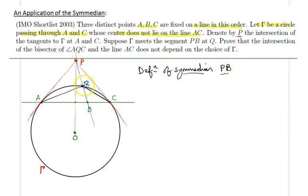And PB is symmetric with respect to the angle bisector, is symmetric to the median with respect to the angle bisector. Let's say this point is M, the midpoint. So QM is the median. QM and QB are symmetric with respect to the angle bisector, which will be that green line.